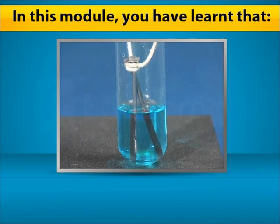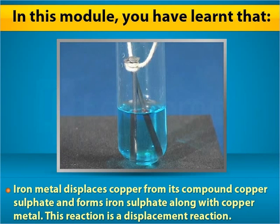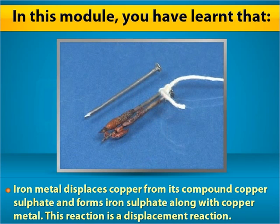In this module, you have learned that iron metal displaces copper from its compound copper sulfate and forms iron sulfate along with copper metal. This reaction is a displacement reaction.